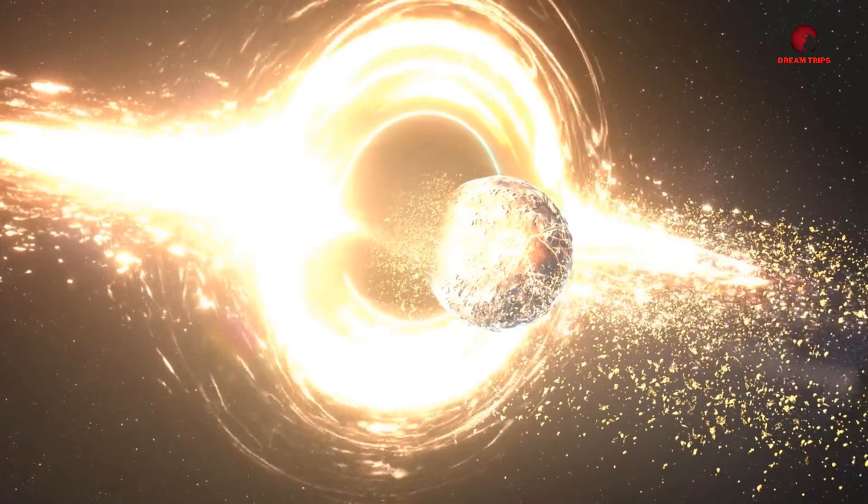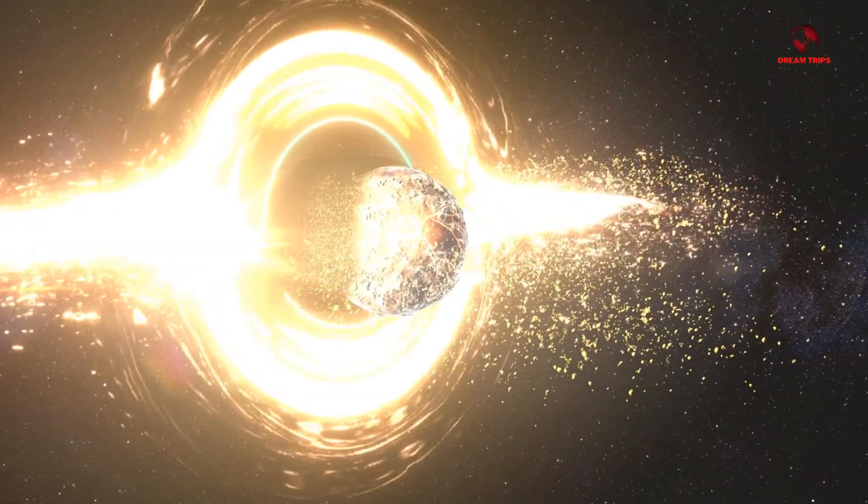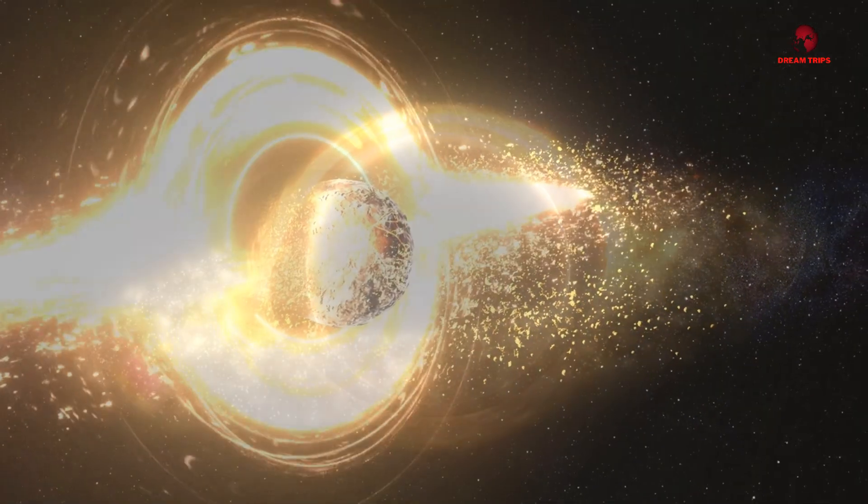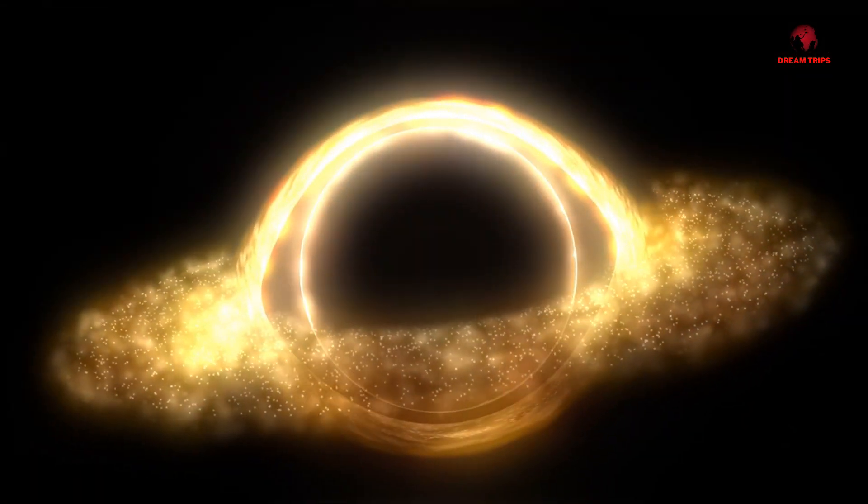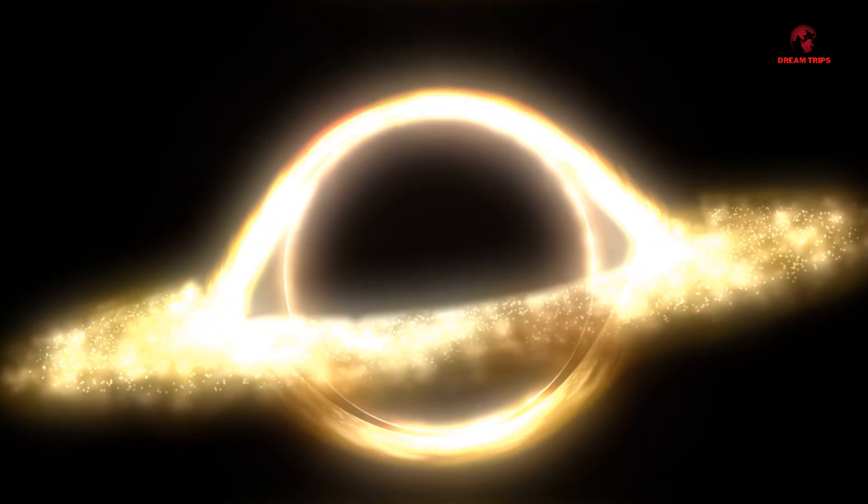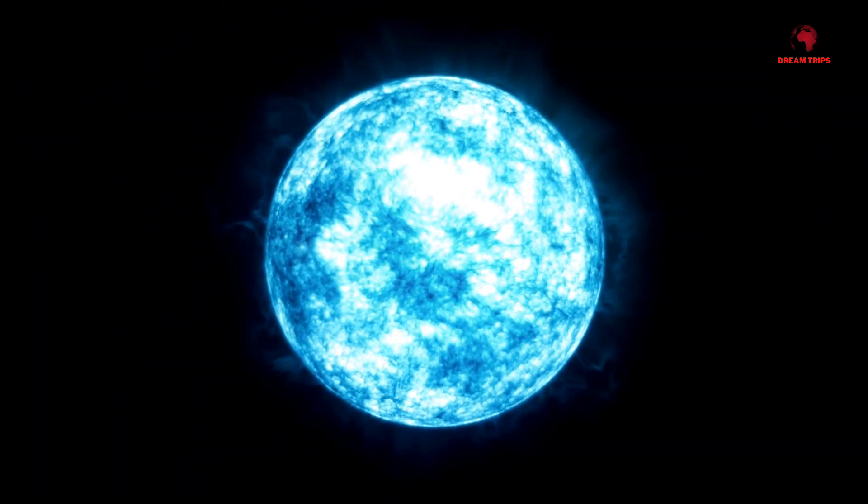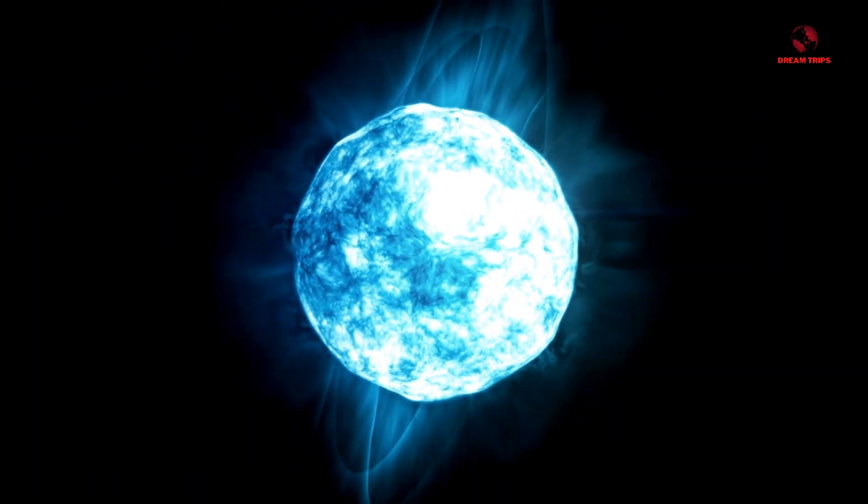A supermassive black hole, rogue and untethered, has been observed by the Hubble Space Telescope. This isn't just any ordinary black hole, this one has been ejected from its galaxy like an outlaw cast out into the wilderness of space. But this outcast isn't wandering alone. It's believed to be creating a glittering trail of newborn stars in its wake.